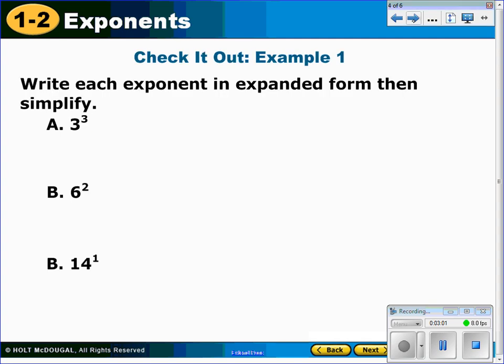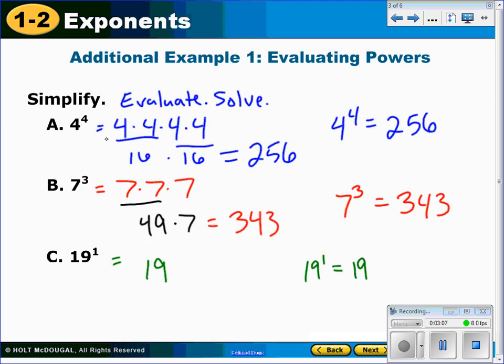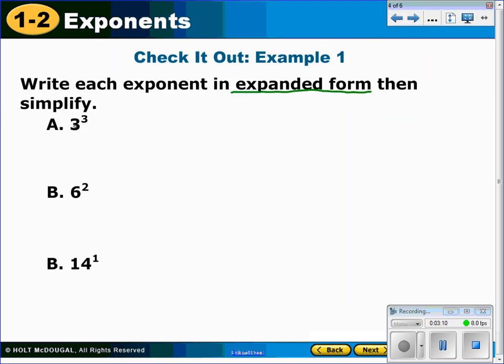Now let's practice writing these in expanded form. Writing in expanded form really is just doing the exact same thing that we did here. When they ask you to write things in expanded form, all they're saying is rewrite it so that it's all the way out. So that 3 to the third is seen as 3 times 3 times 3, which would give us 27. Or 6 to the second power is 6 times 6. That's it written in expanded form, and it gives us 36. And then finally, 14 to the first power. This is actually in expanded form, which still just gives us 14.